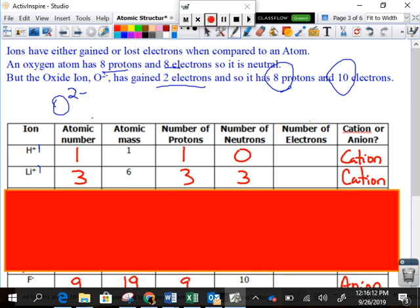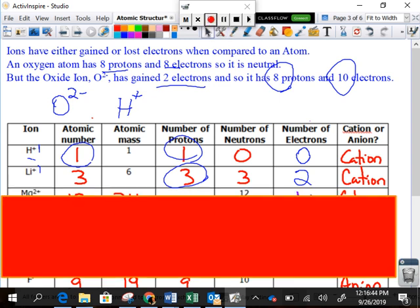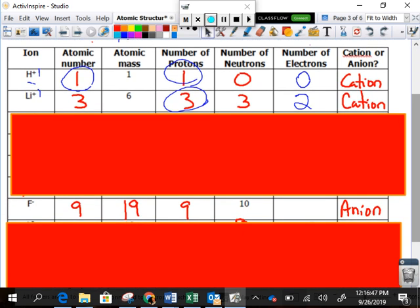If you have a positive charge, that should mean that it's losing an electron. So this hydrogen's a plus one. It has one proton. But if it's a positive charge, it has no electrons. Lithium has three protons, positive one charge. It only has two electrons. And some people like to kind of write a little charge in there to help them out. I'm not going to reveal what's behind this red box here. You guys can fill that in on your own.